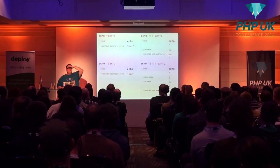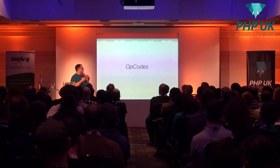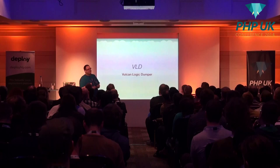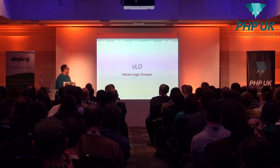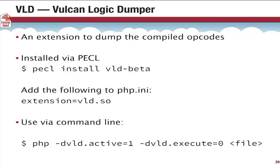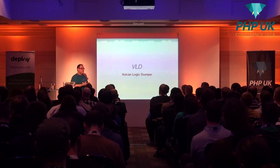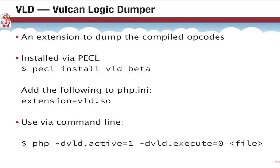Moving on from tokens, we get to opcodes — this is where PHP actually does a lot of its work. If we're looking at opcodes, it means we're going to look at VLD, the Vulcan Logic Dumper, written by Derick Rethans, who is also speaking here. VLD is an extension that will dump the compiled opcodes — it's a PECL extension. You can just 'pecl install vld beta' because everything in PECL is beta. Add it to your PHP INI and activate it on the command line with '-d vld.active=1'. You can set execute to zero to not actually execute the code, just dump the opcodes.